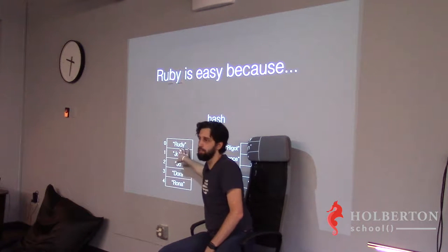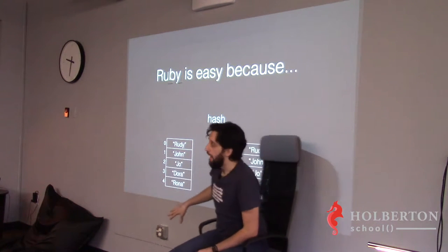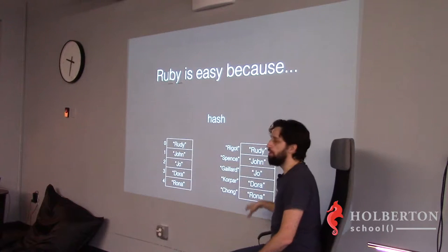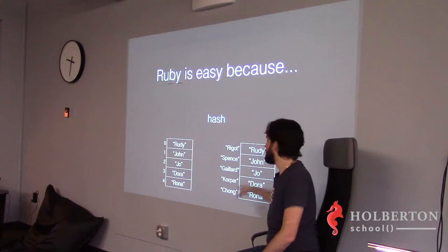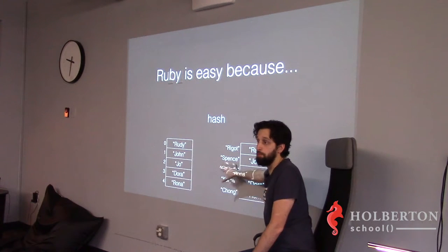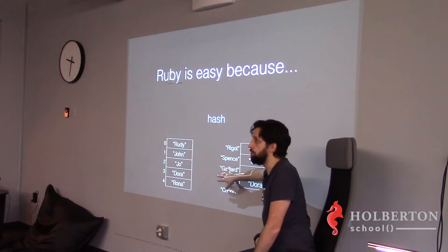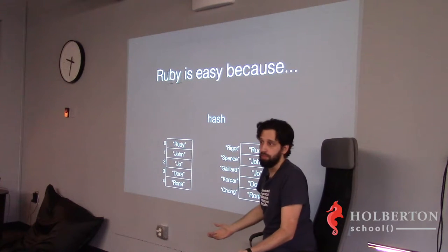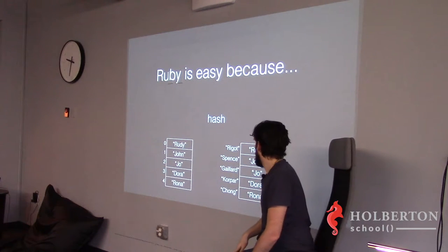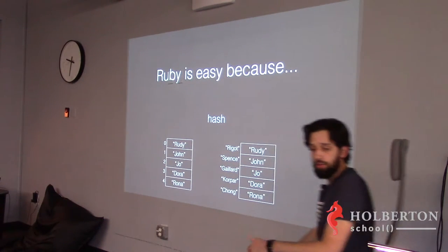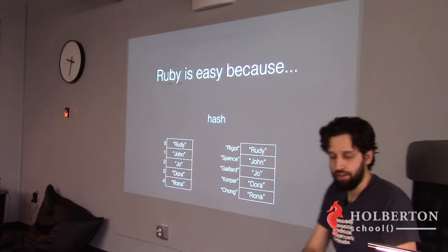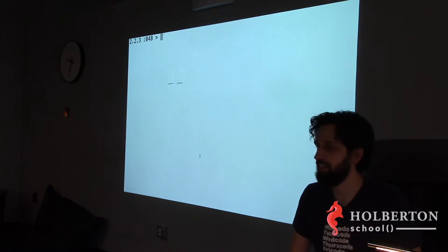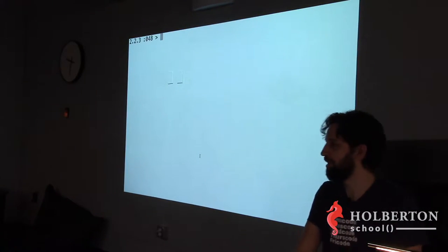Arrays have indexes which are always numbers, and you extract an element by its position. Hashes allow you to do roughly the same thing except instead of numeric indexes you have keys, which can be anything. To define a hash in Ruby, you use curly braces — I mentioned that a few minutes ago.